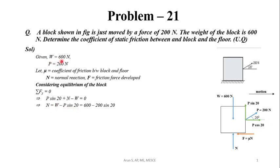Substituting W = 600 N and P = 200 N, we get N = 600 - 200 sin 20 = 531.6 N.